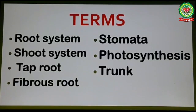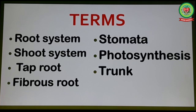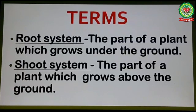Before we start, I will discuss the key terms of this chapter: number one, root system; number two, shoot system; number three, tap root; number four, fibrous root; next, stomata; next, photosynthesis; and last, trunk. As we go through the chapter we will discuss all these terms one by one. Today I will discuss root system and shoot system.